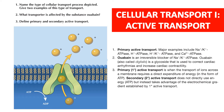Primary, or first-degree, active transport is when the transport of ions across a membrane requires a direct expenditure of energy in the form of ATP. Secondary, or second-degree, active transport does not directly use energy but instead takes advantage of the electrochemical gradient established by first-degree active transport.